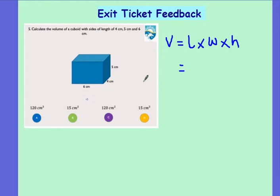So in this case, my length is 6, my width is 4 and my height is 5. 6 times 4 gives me 24. So I've got 24 multiplied by 5.